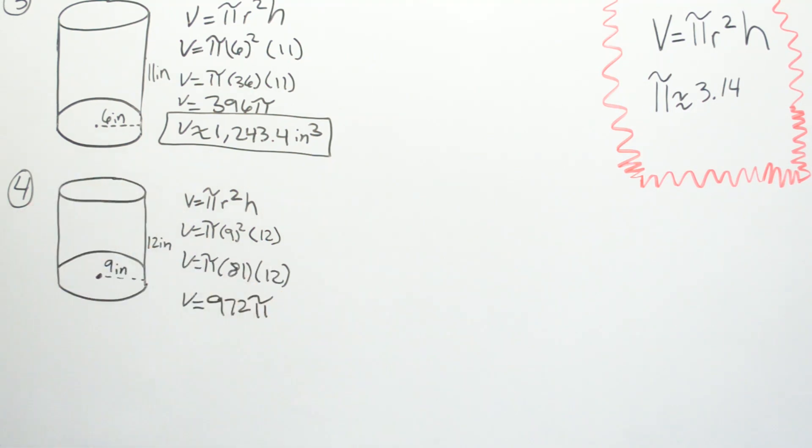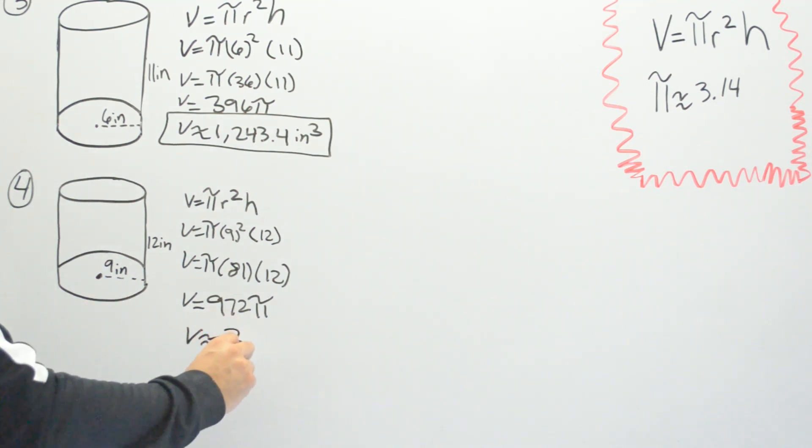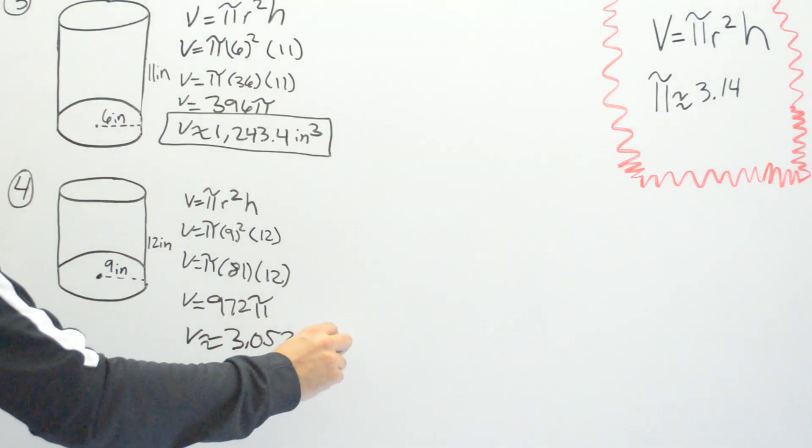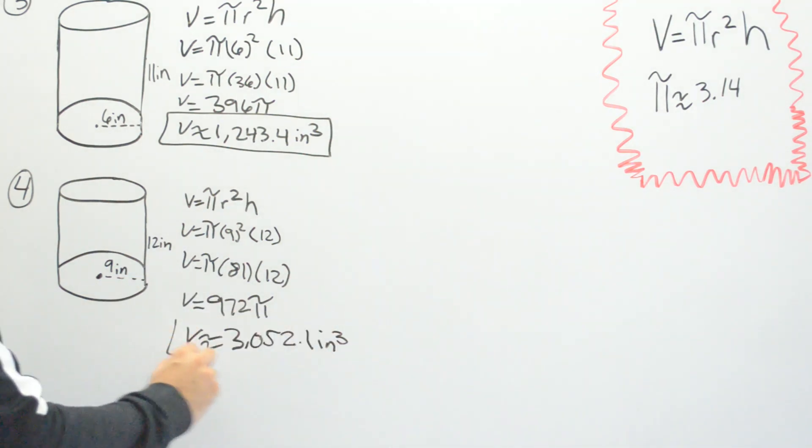You might leave it as that, but once again depending on your teacher I only go one step further if she wants you to solve it using 3.14. And then when you multiply that we get 3,052.08 inches cubed.